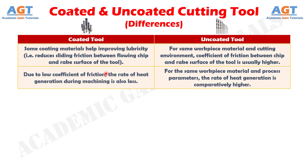Number 8. In case of a coated tool, due to low coefficient of friction, the rate of heat generation during machining is also less, whereas for the same workpiece material and process parameters, the rate of heat generation is comparatively higher for an uncoated tool.